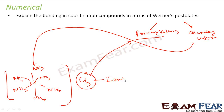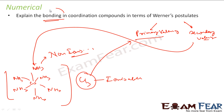The secondary valency is non-ionizable, while the primary valency is ionizable. This is the key distinction in Werner's bonding theory for coordination compounds.